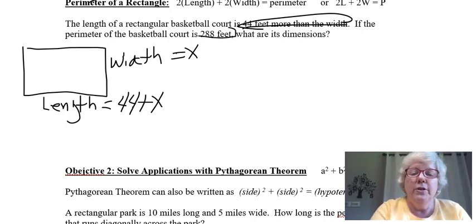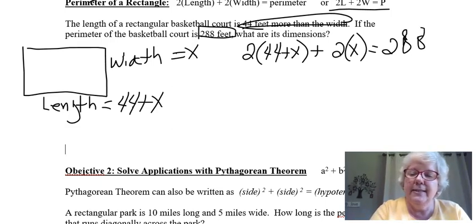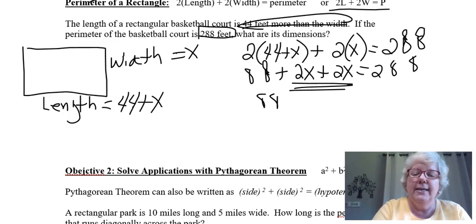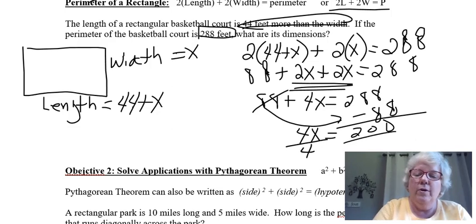Now the perimeter is 288. So we're going to put it in the formula. Twice the length would be 2 times 44 plus x, plus twice the width would be 2 times the x equals the perimeter 288. This is the formula that's given at the top of the screen. Let's do the distributive property. 2 times 44 is 88 plus 2x plus 2x equals 288. Combine my like terms on the same side. That's 88 plus 4x equals 288. Move that 88 over and change the sign. That's going to give me 200, then divide by 4. Divide by the coefficient. So x equals 50.